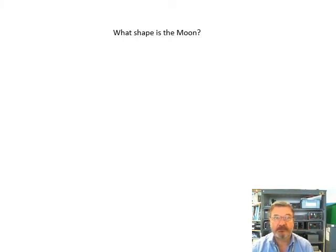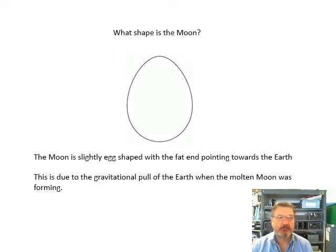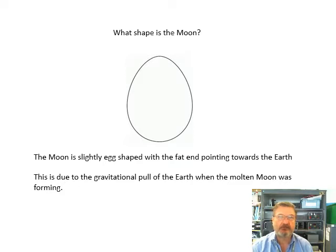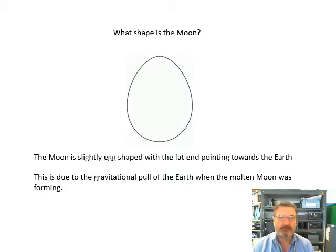First of all, what shape is the moon? Not a perfect sphere. It is kind of an egg shape. The moon is slightly egg-shaped and the fat end points towards the Earth. This is to do with how the moon formed and the effect of the gravitational pull of the Earth when the moon was all molten. So: slightly egg-shaped, fat end pointing towards the Earth.